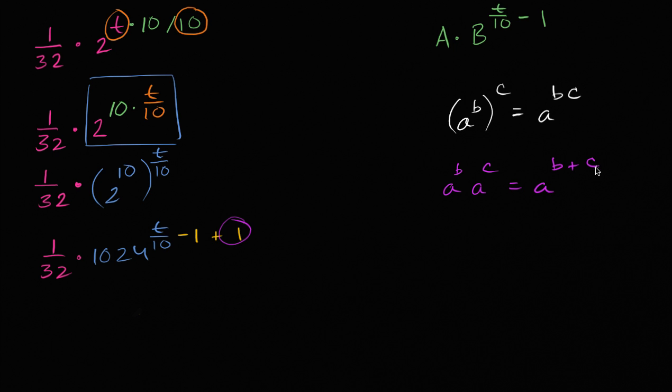And so you could also go the other way around. If you have a to the b plus c, you could break it up into a to the b times a to the c. So this business right over here, this is 1024 to the t over 10 minus 1 plus 1. So we can break this up as 1024 to the t over 10 minus 1. That's this part here.